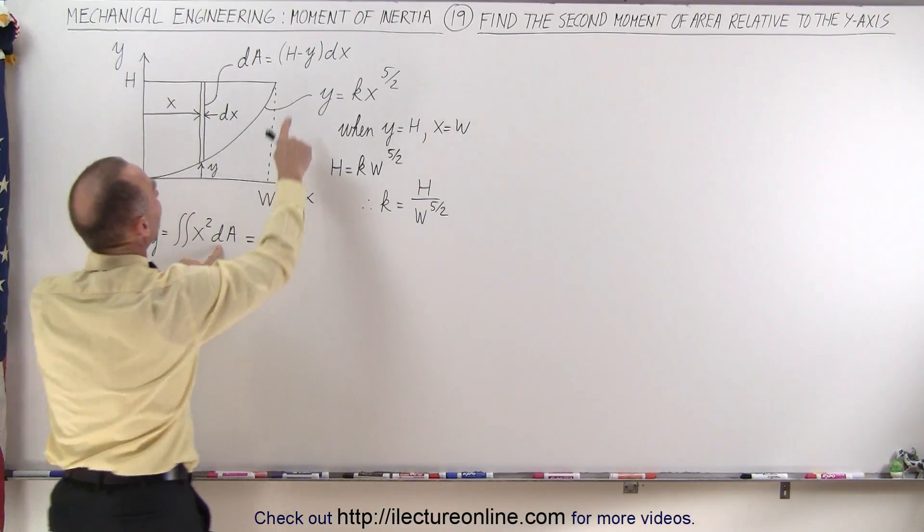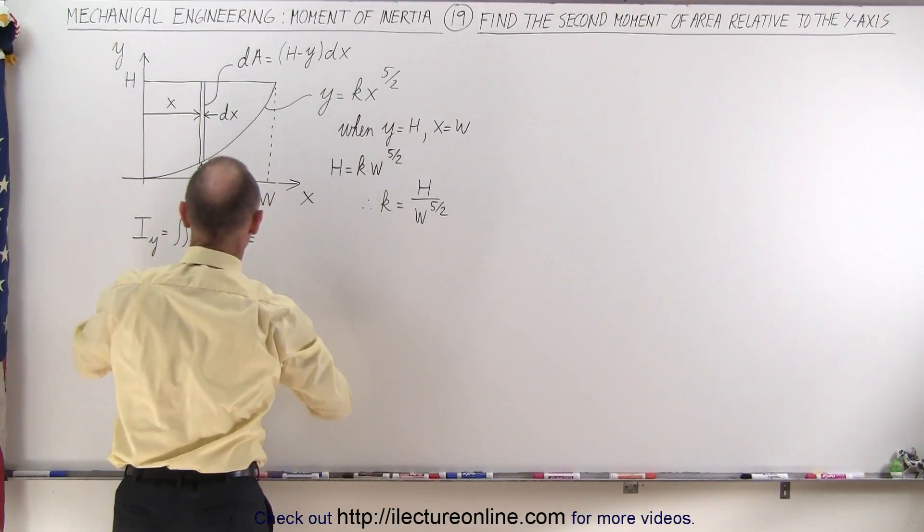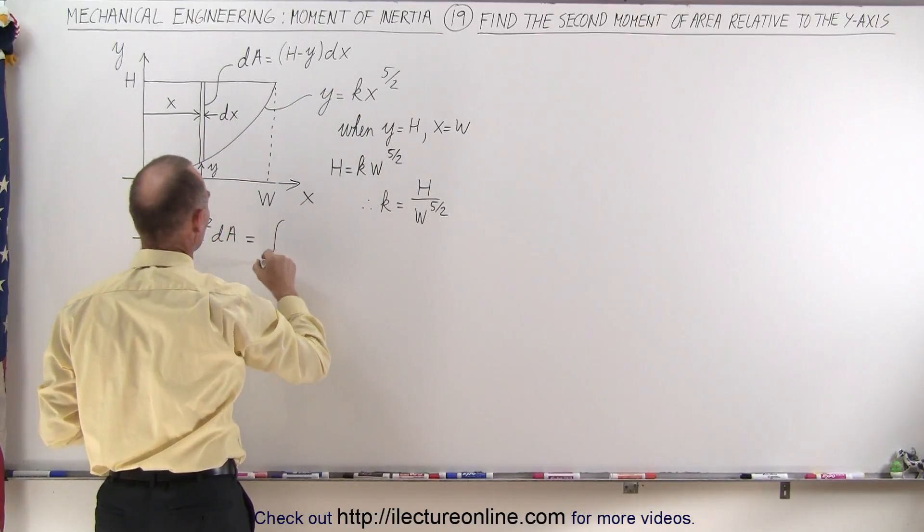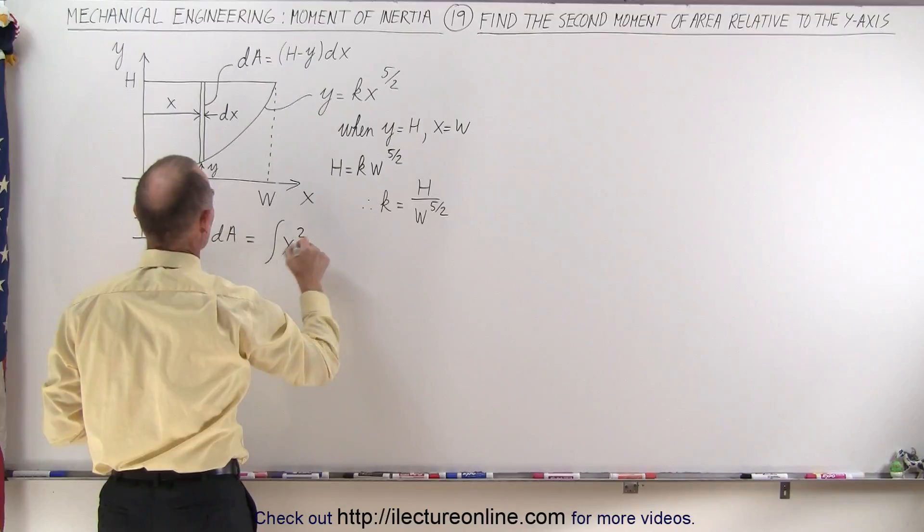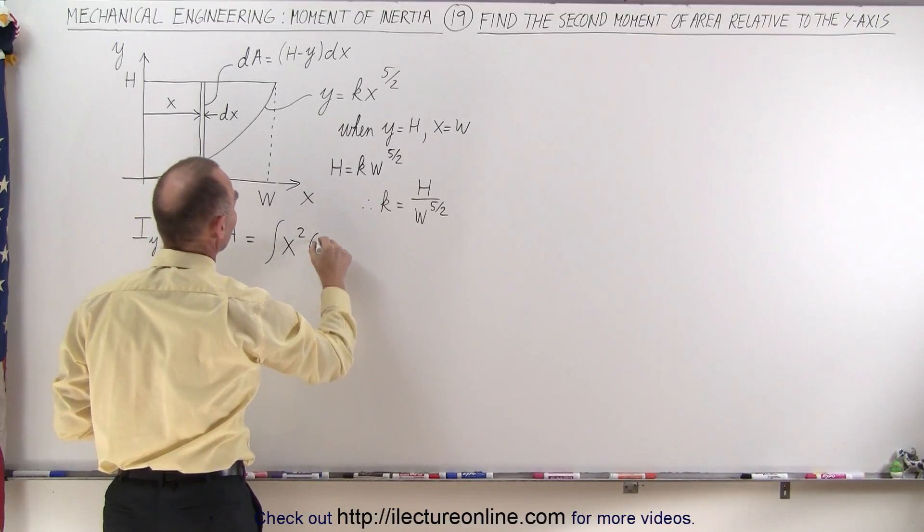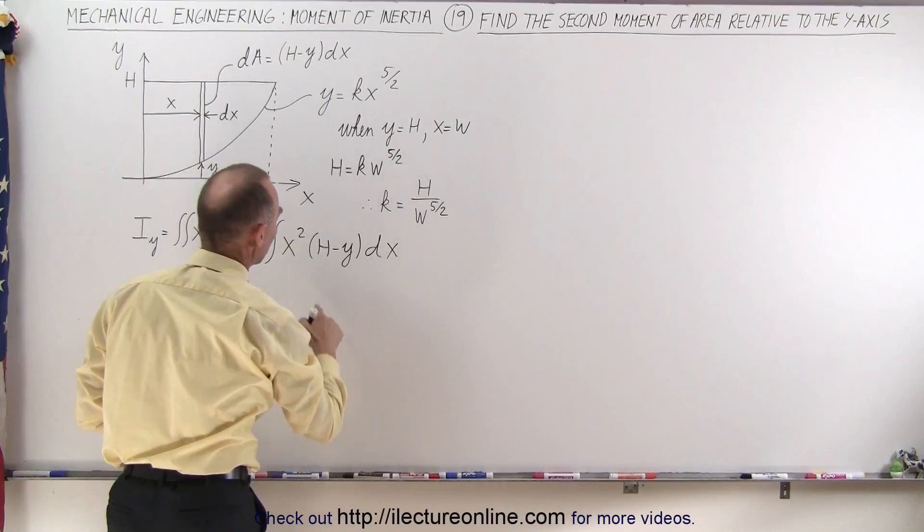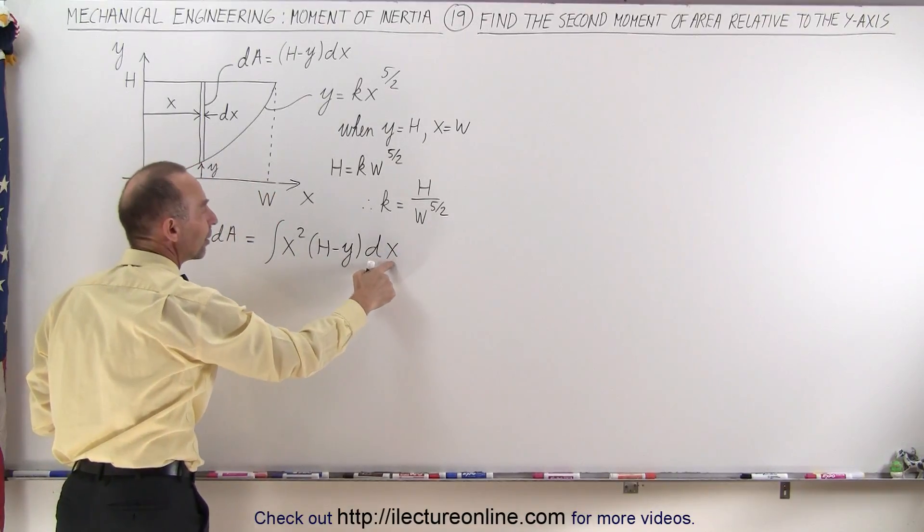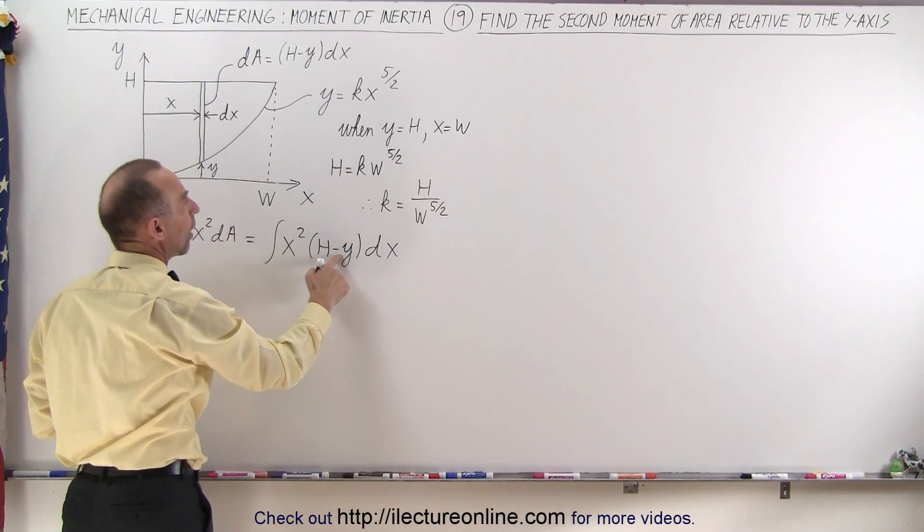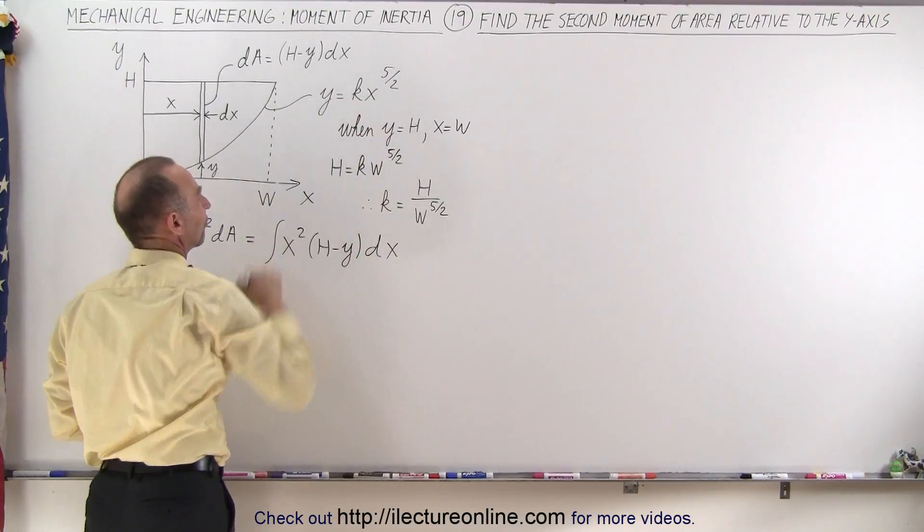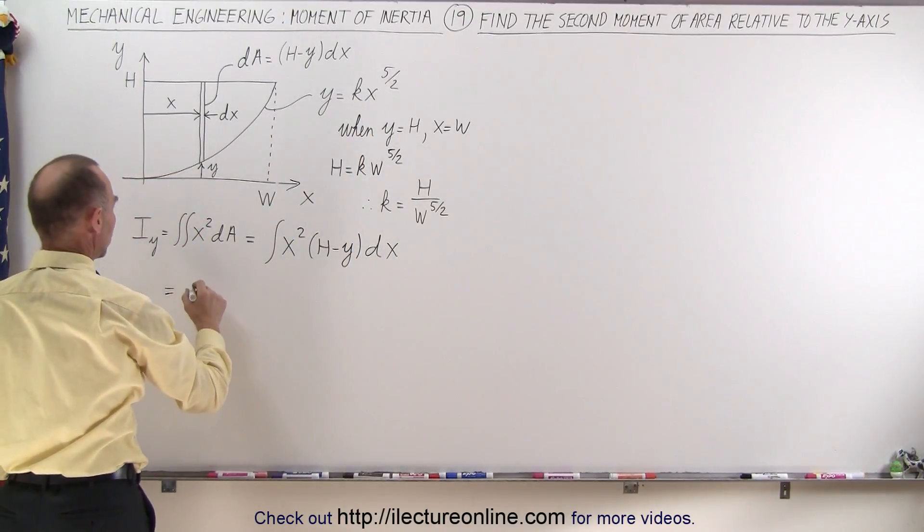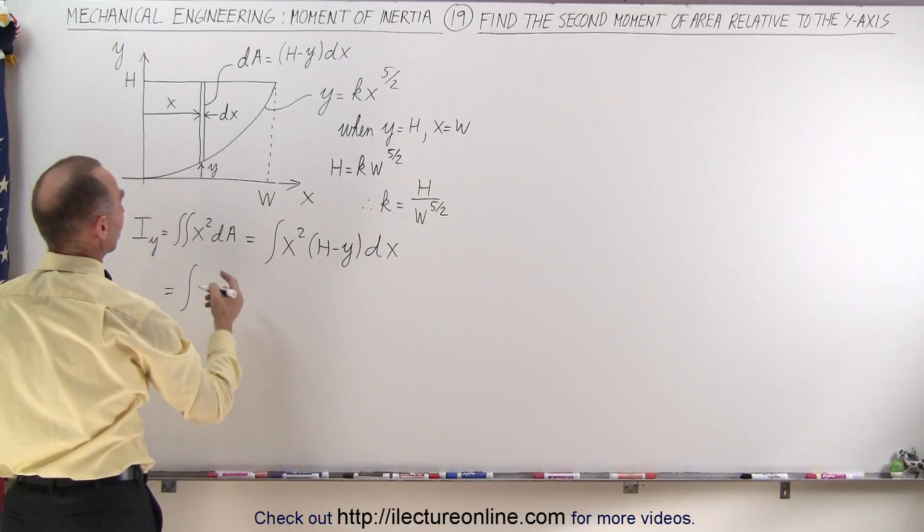Well, first of all, dA is going to be replaced by h minus y times dx. So this becomes the integral of x squared, and instead of dA we're going to have h minus y times dx, and notice we're going to integrate only over the variable x, so we have to get rid of the y and replace it by kx to the 5 halves.